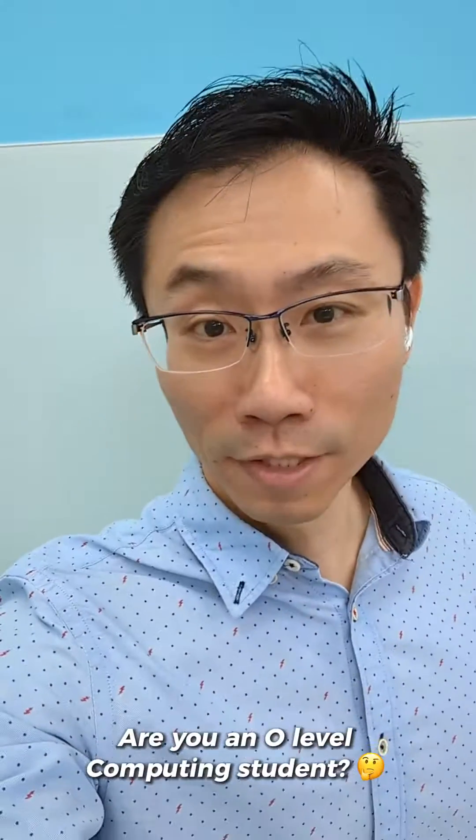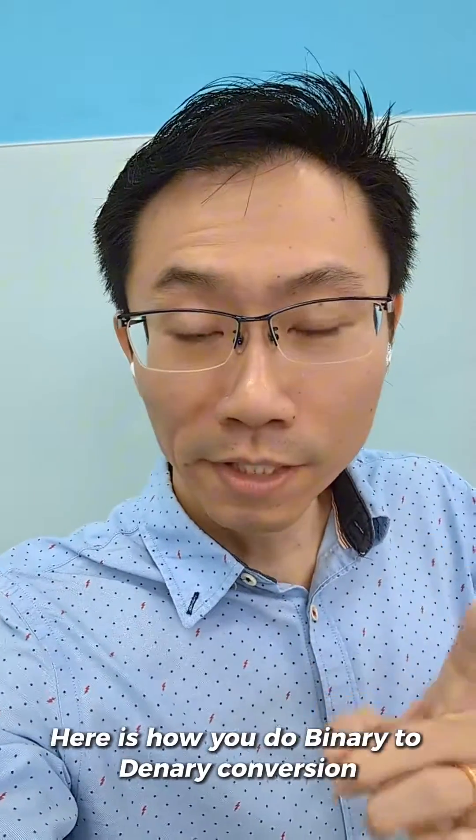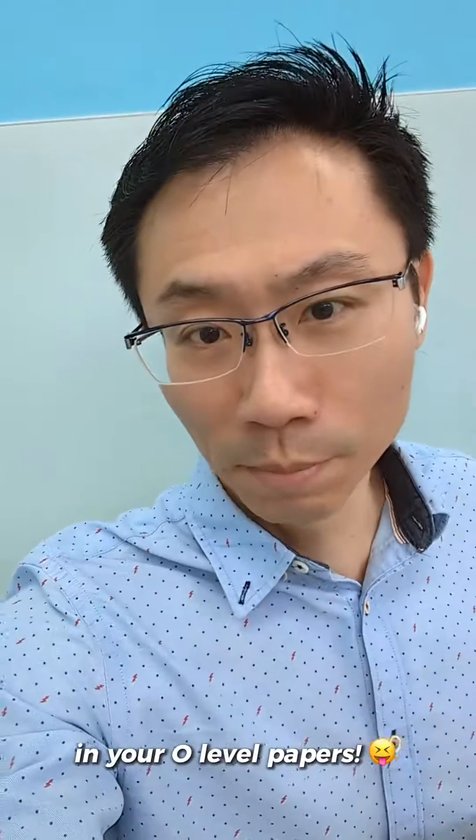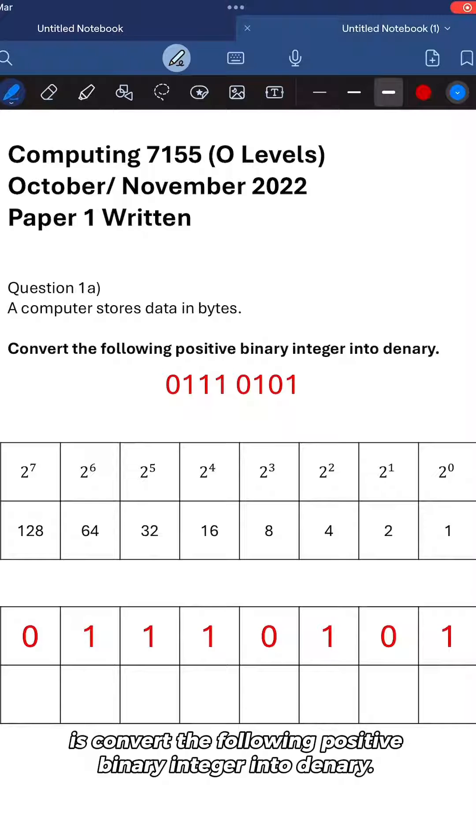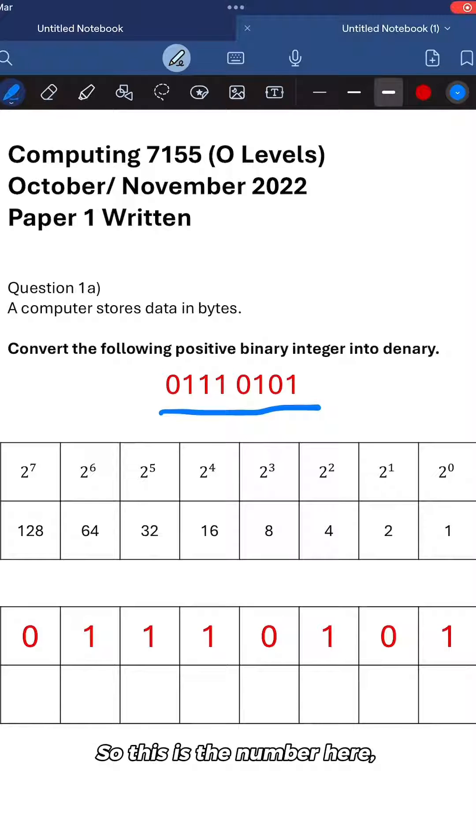Are you an O-level computing student? Here is how you do binary to denary conversion in your O-level papers. Question 1a: A computer stores data in bytes. What we're supposed to do here is convert the following positive binary integer into denary. So this is the number here: 0111 0101.